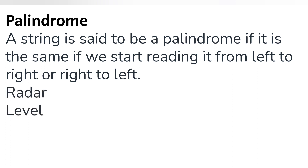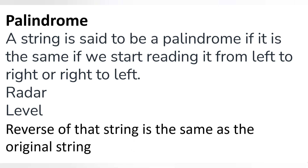For example, we have two words: first is 'radar' and second is 'level'. If you read 'radar' from left to right it will be R-A-D-A-R, and from the opposite side it is also R-A-D-A-R. Similarly, 'level' read from right to left is L-E-V-E-L, and from the opposite direction it is also L-E-V-E-L. That is the meaning of palindrome.